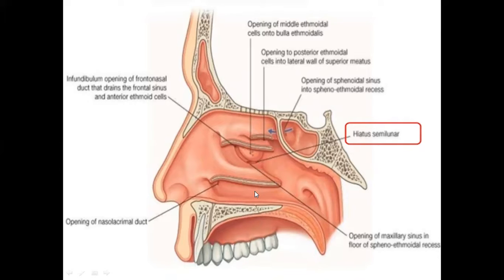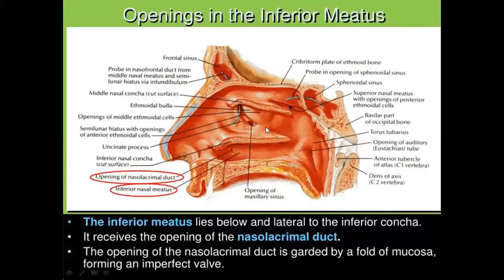The inferior meatus is the space beneath the inferior nasal concha. It receives the opening of the nasolacrimal duct at the junction between the anterior one-third and the posterior two-thirds. The opening of the nasolacrimal duct is guarded by the lacrimal fold, also called the valve of Hasner.